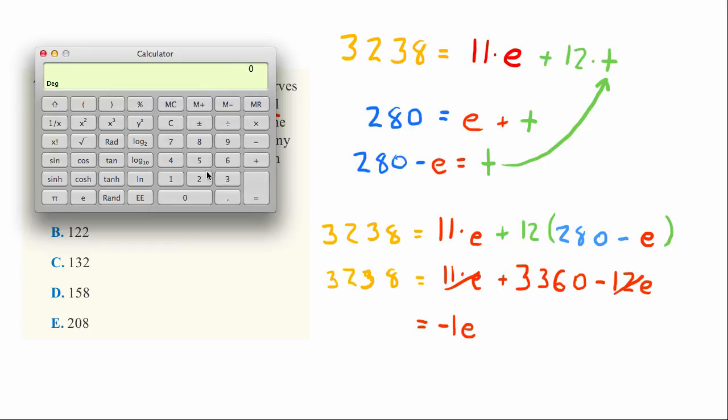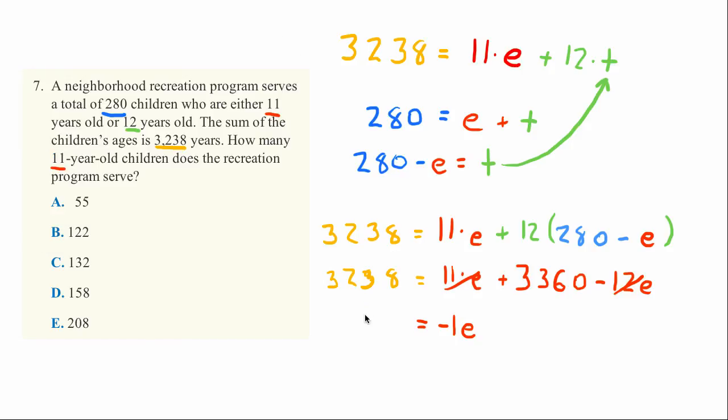3,238 minus 3,360 equals negative 122. Since both sides are negative, we can cancel the negative signs.